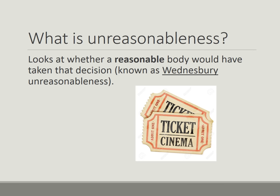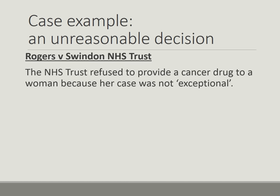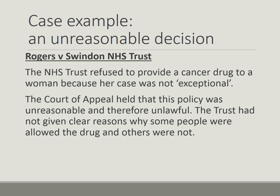Lastly, you need to mention unreasonableness. This looks at whether a reasonable body would have taken the decision. Unreasonableness comes from the case called Wednesbury, about opening a cinema on a Sunday, so it is known as Wednesbury unreasonableness. The case example for unreasonableness is Rogers v. Swindon NHS Trust. In this case, the NHS Trust refused to provide a cancer drug to a woman because her case was not exceptional. The Court of Appeal held that this policy was unreasonable and therefore unlawful, as the Trust had not given clear reasons why some people were allowed the drug and others were not.